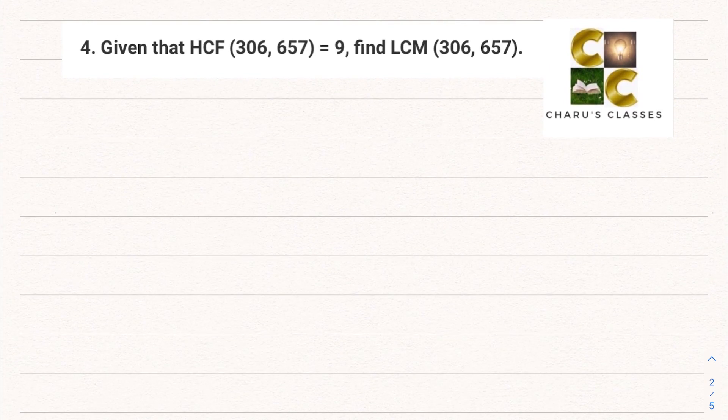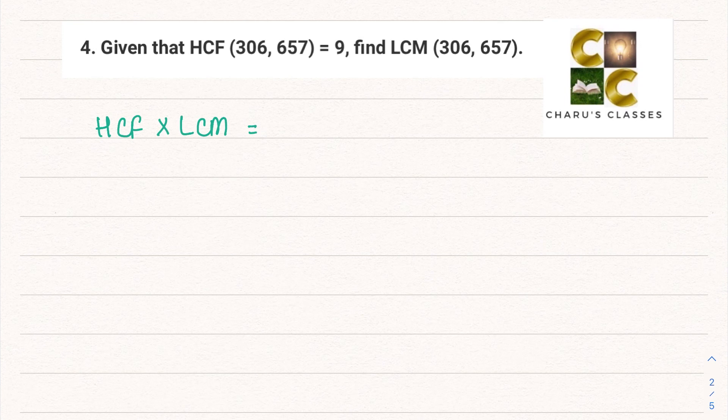Question number four: Given that HCF of 306 and 657 is 9, find the LCM of 306 and 657. That means HCF of two numbers is given to us and we have to find out LCM. So we will use the formula we already know: HCF × LCM, if we take the product of both, that is equal to the product of the two numbers.